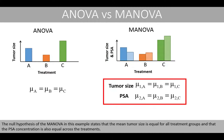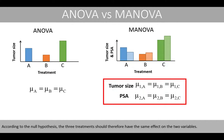The null hypothesis of the MANOVA in this example states that the mean tumour size is equal for all treatment groups, and that the PSA concentration is also equal across the treatments. According to the null hypothesis, the three treatments should therefore have the same effect on the two variables.